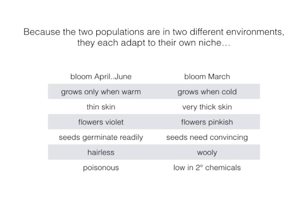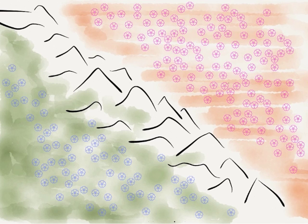Seeds might germinate readily on the coastal side, but in the desert seeds might become very resistant to germinating because of those boom and bust years — only germinating after sitting in water for two weeks or so. On the desert side, plants might become woolly to reduce the amount of sun hitting the chlorophyll, and they might also be very low in defensive secondary chemistry. So by these scenarios you can see how these two populations would diverge, ending up with pink ones on the desert side and lavender ones on the coastal side.